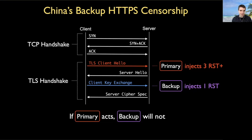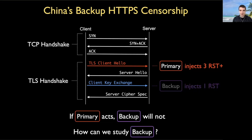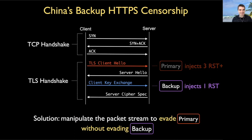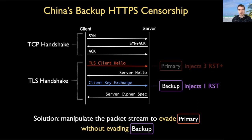This seriously complicates our ability to study the backup. All of our test connections and experiments are just going to be processed by the primary, which will promptly shut down the backup. So what can we do to study the backup censorship middlebox in isolation? Our solution is to manipulate the packet stream in such a way that we can disable the primary without affecting the backup middlebox. Once we have this ability, we can shut down the primary for our connections and study the backup middlebox in isolation — and that's what we do in this work.